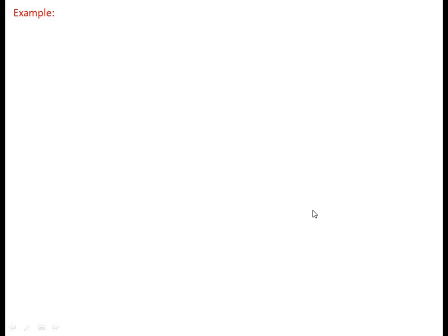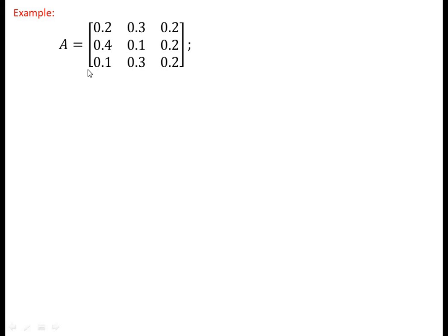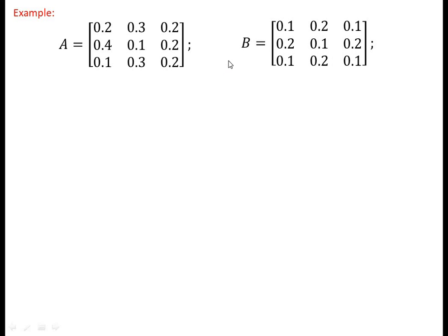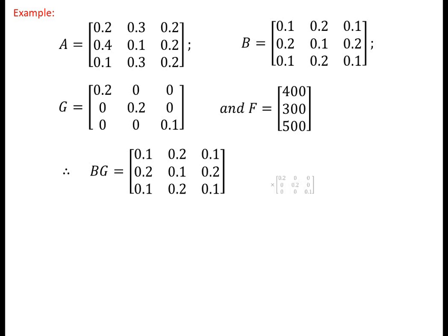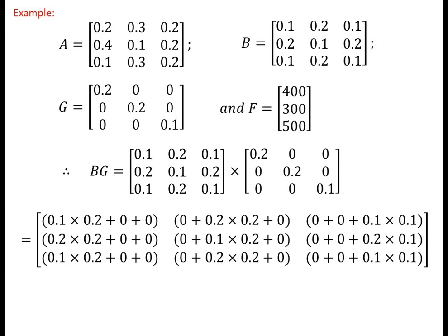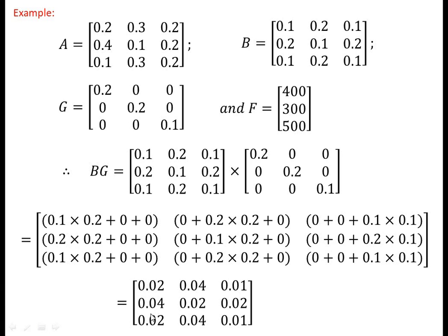For example, if the input coefficient matrix A is this, the capital coefficient matrix B is this, the diagonal matrix of sectoral growth rates G is this, and the final demand vector F is this, then B into G is equal to the matrix: 0.02, 0.04, 0.01, 0.04, 0.02, 0.02, 0.04, and 0.01.